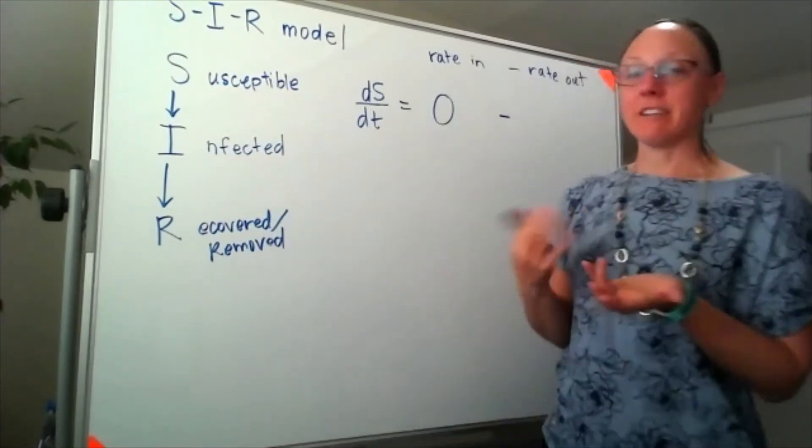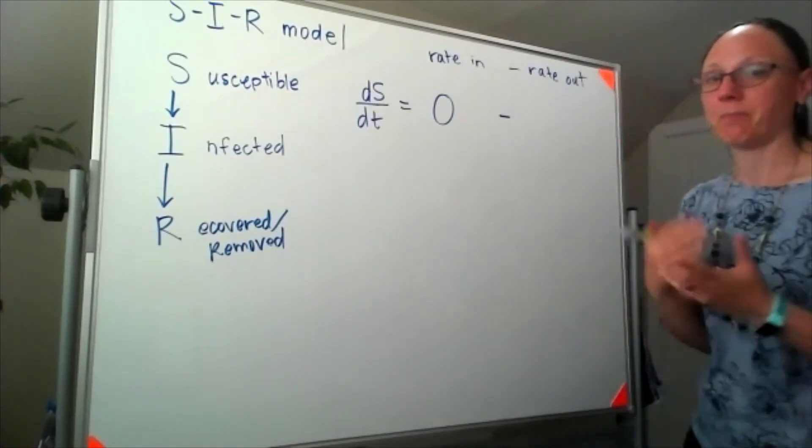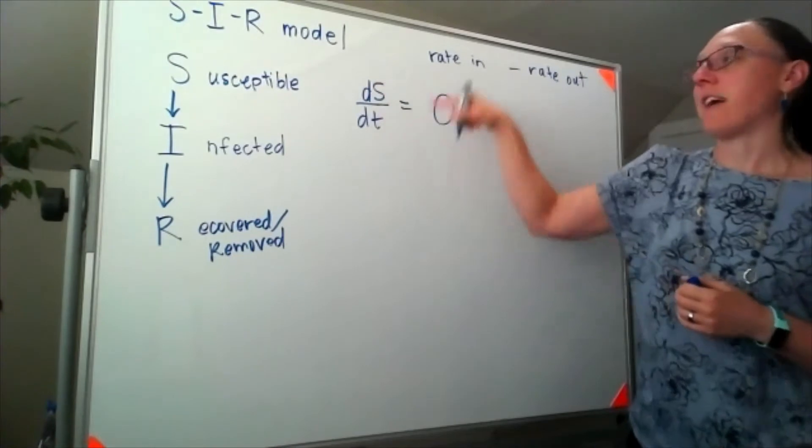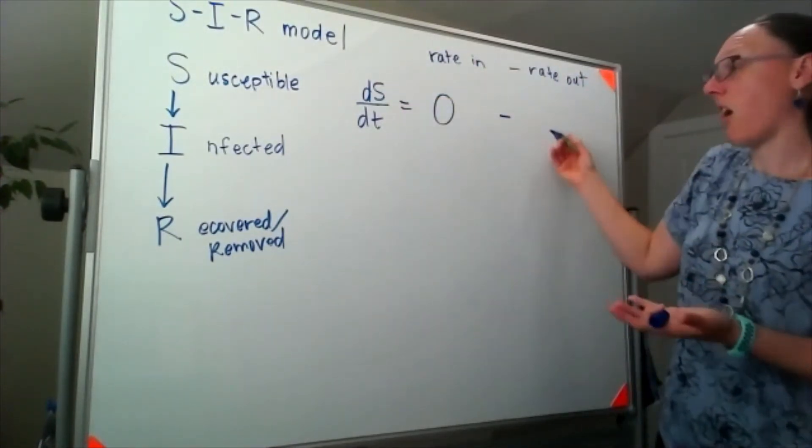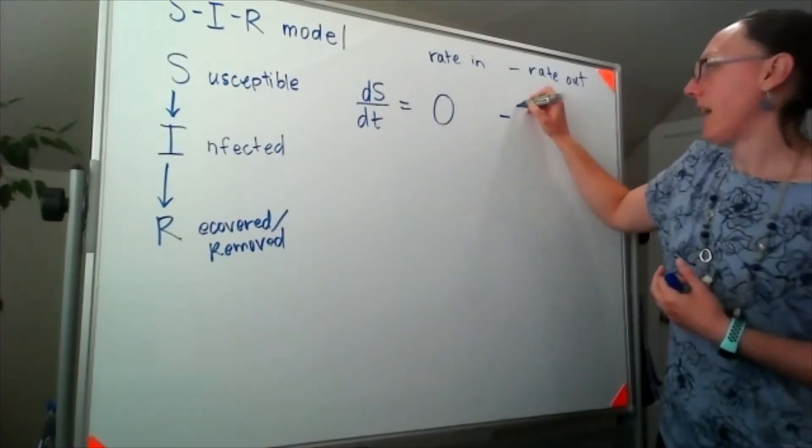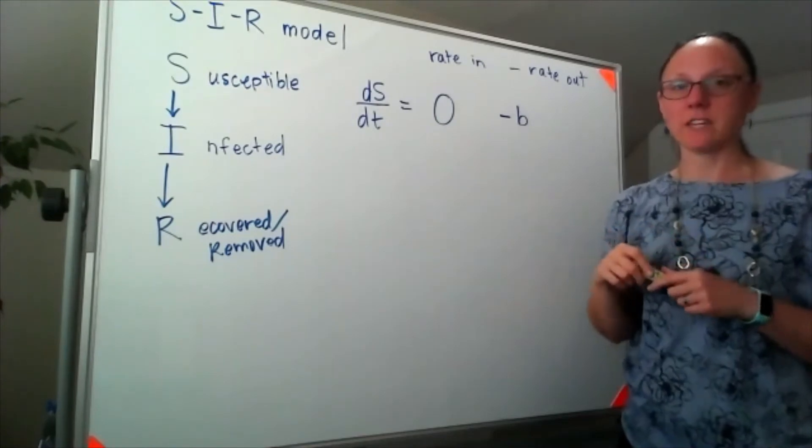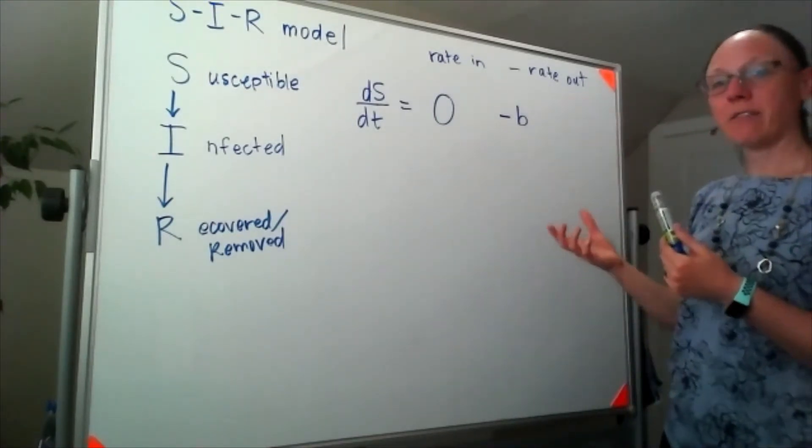There are different models. This particular model that was discussed in class the other day assumes that the rate of infection is proportional to a constant - and I'm going to use B because that's the constant that our textbook uses.